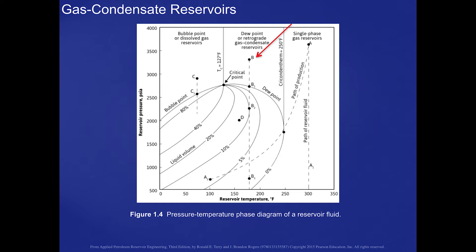And so hence the name retrograde for one of the titles of these kind of reservoirs. But as you can see, it reaches the dew point, point B1. Liquid begins to condense in the reservoir.